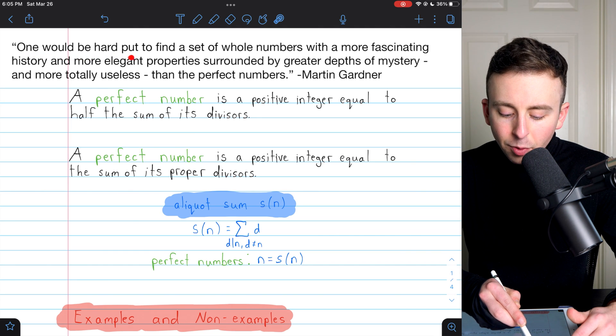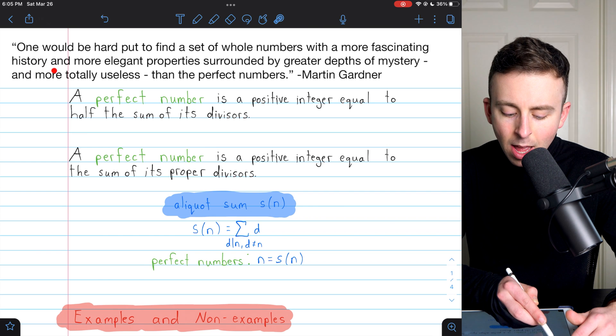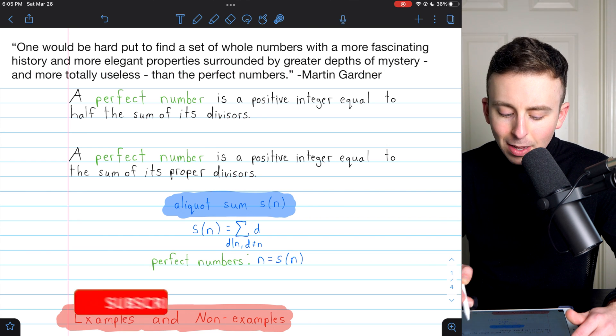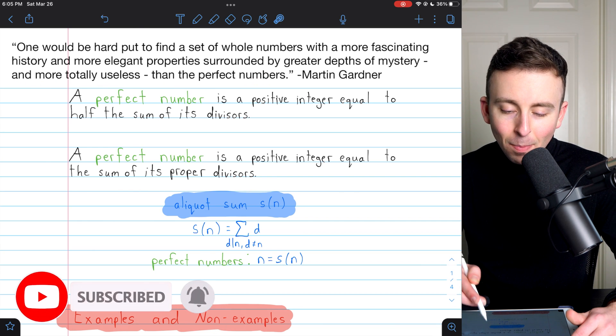One would be hard put to find a set of whole numbers with a more fascinating history and more elegant properties surrounded by greater depths of mystery and more totally useless than the perfect numbers.